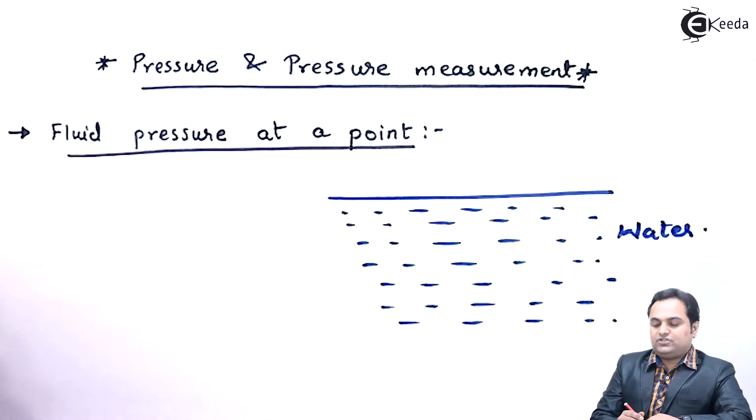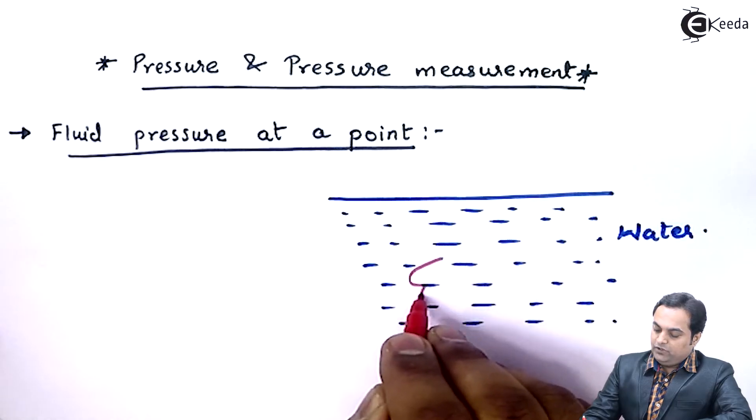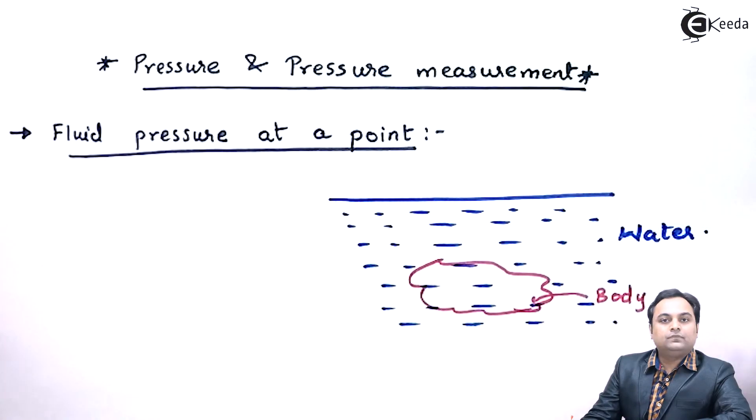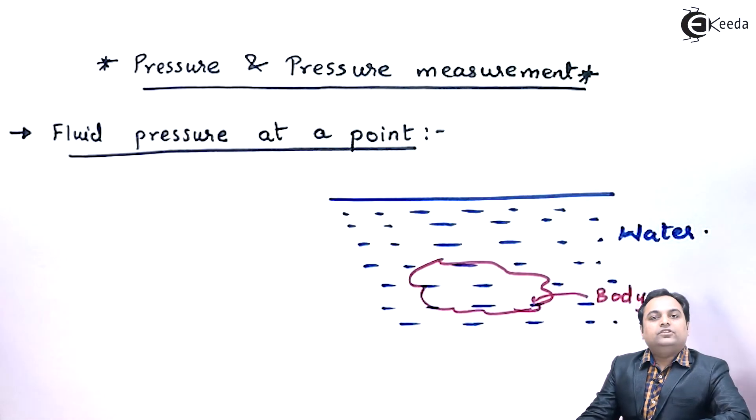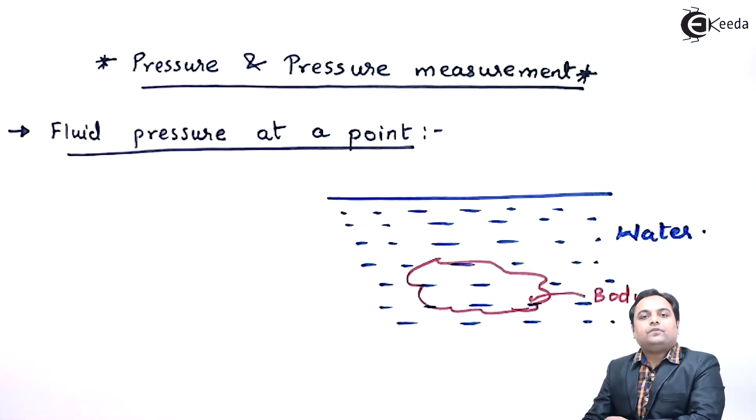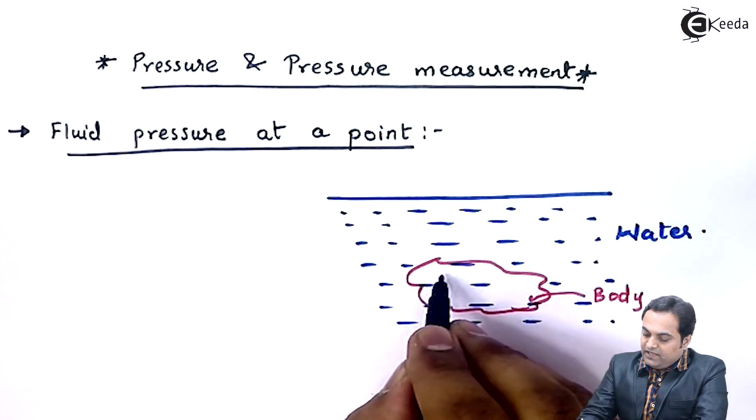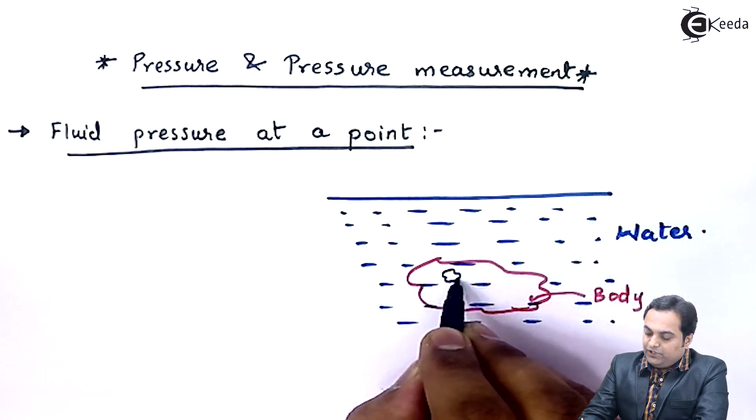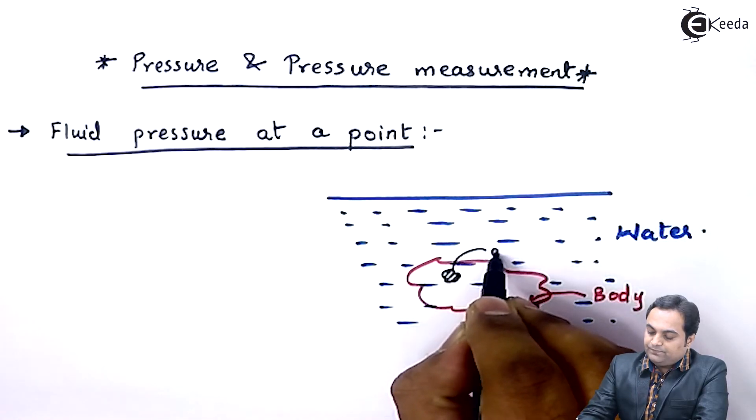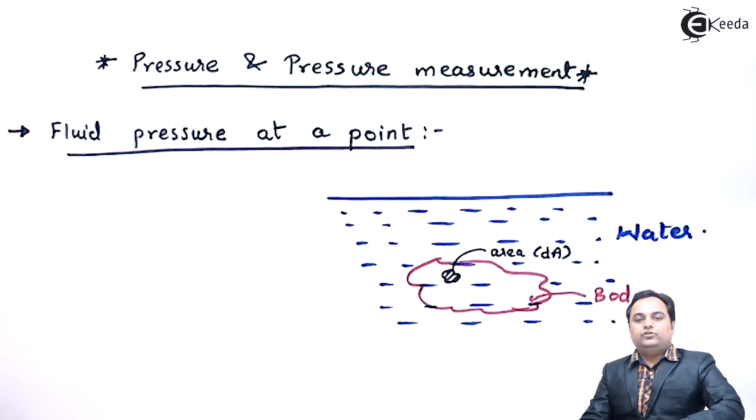Inside this water if we have a body of any given shape, so there would be a pressure acting on this body. Now how this pressure would be acting? Suppose if I take a very small area of this body, I will call this area as dA, that is a small amount of area.